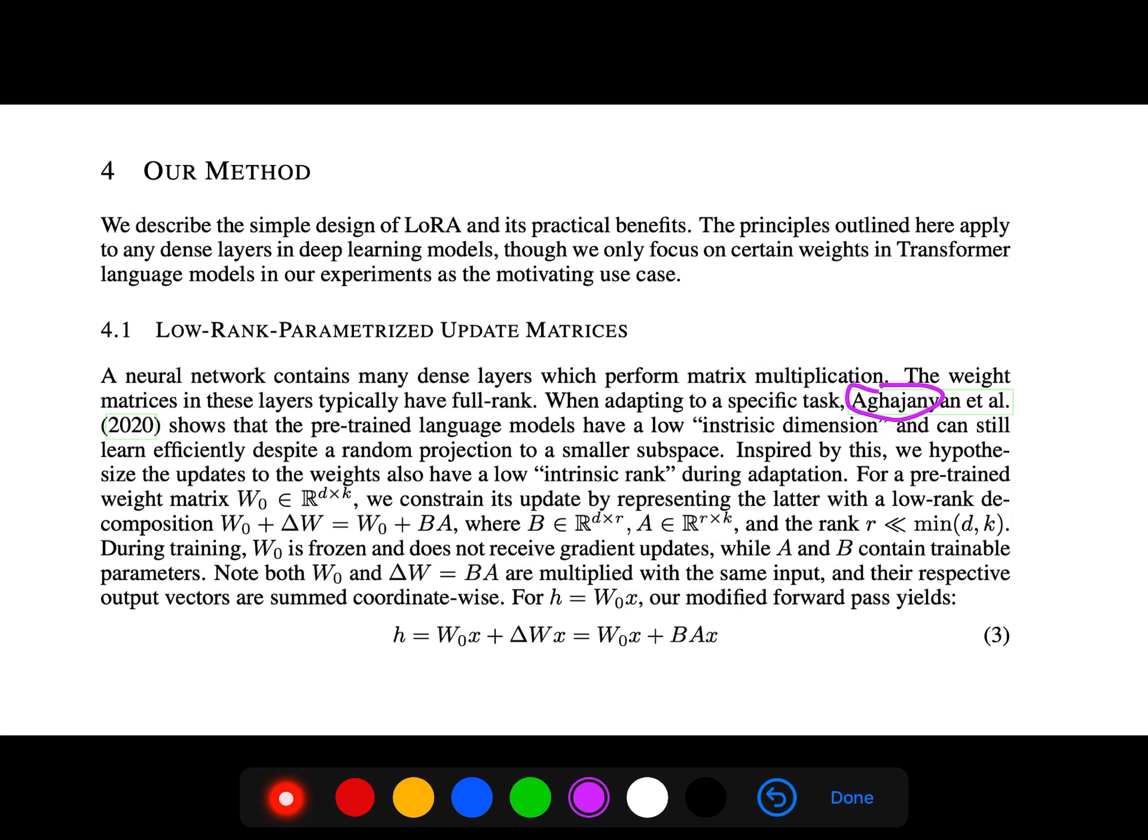For a pre-trained weight matrix W₀, we constrain its updates by representing the latter with a low rank decomposition. So W₀ plus, and so we decompose it into low rank B and A, and rank r is less than minimum of d and k.